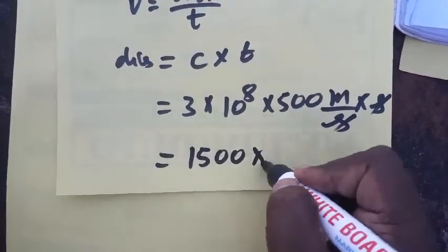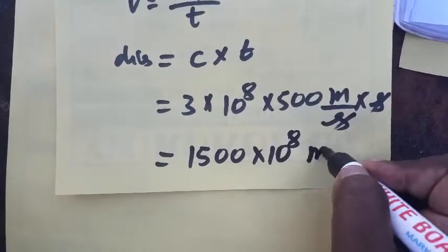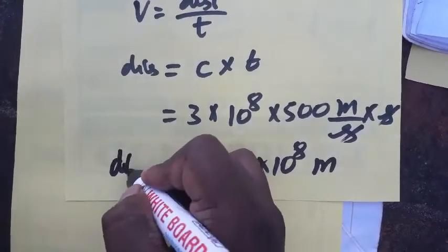It is 1500 into 10 power 8 meters, the distance between the sun and earth. Thank you.